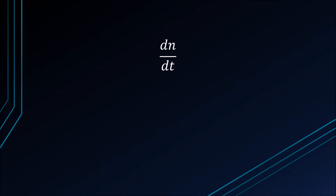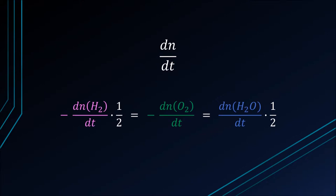Let's write the ratios of all the rates together. The rate of consumption of hydrogen multiplied by one-half equals the rate of consumption of oxygen, which equals the rate of formation of water vapor multiplied by one-half.